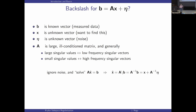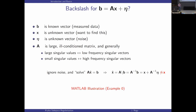You might say noise is small, I'll just ignore it and hit it with backslash — solve AX = B. If you do that, you're essentially applying A inverse to B. You get A inverse applied to AX, which is the truth, but you also get A inverse applied to the noise. So the computed solution looks like the truth plus some amplified noise. If the noise is small you might hope it's fine, but in general it's not a good solution.